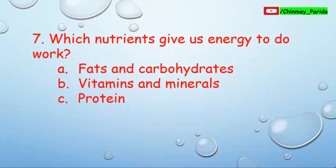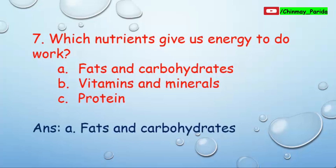Question number seven: Which nutrients give us energy to do work? Option A: Fats and carbohydrates, Option B: Vitamins and minerals, Option C: Protein. From the previous question you know vitamins and minerals protect us from diseases. The correct answer is Option A — fats and carbohydrates give us energy to do work.